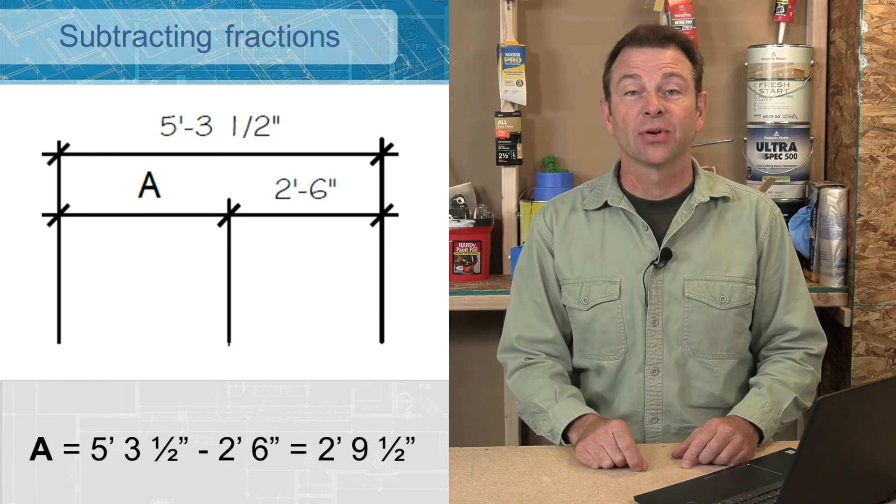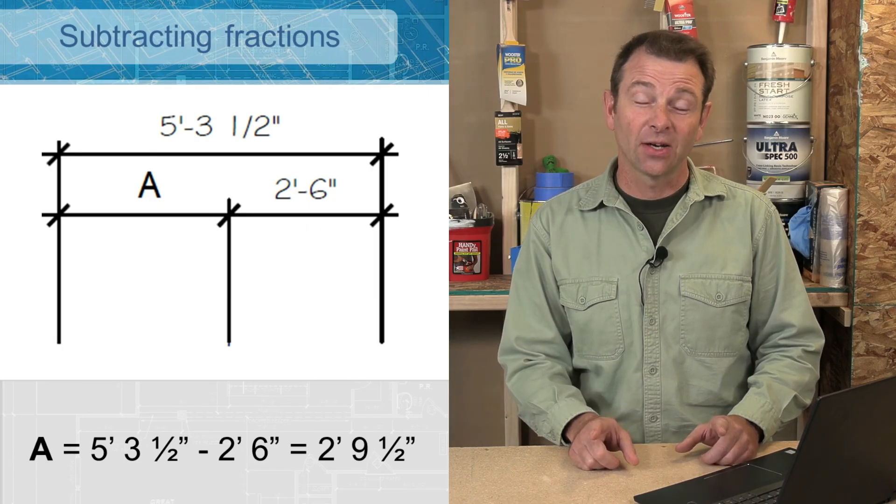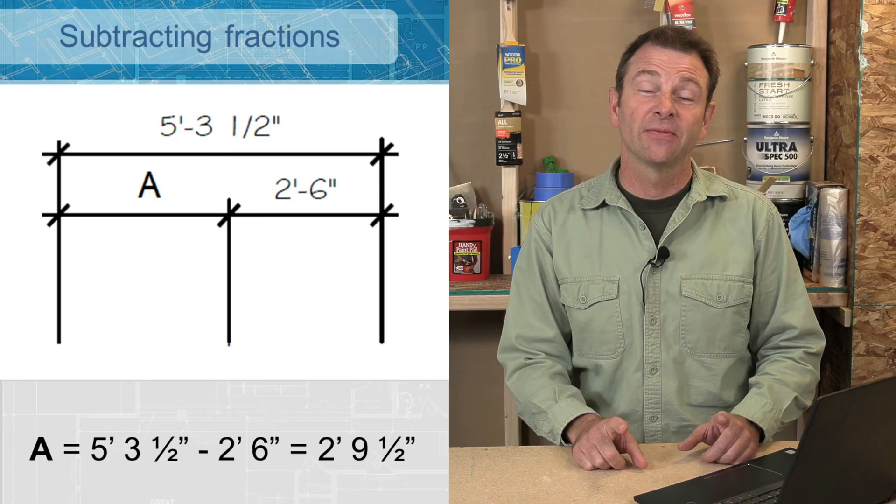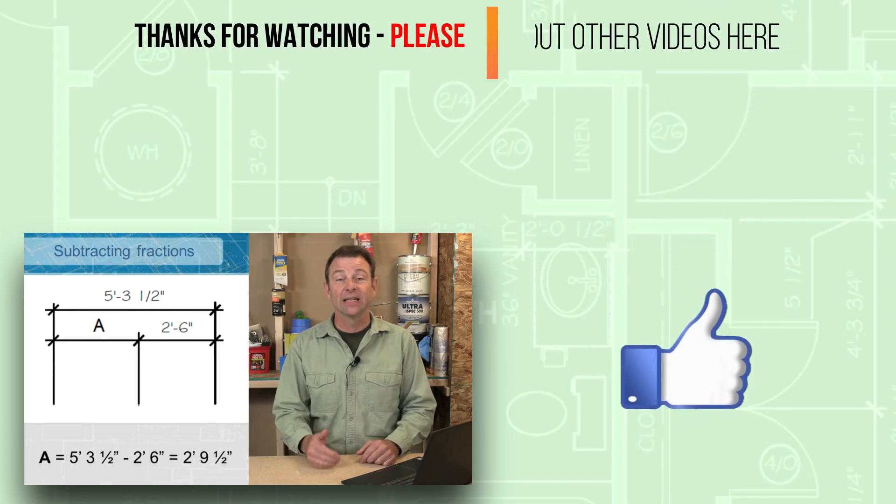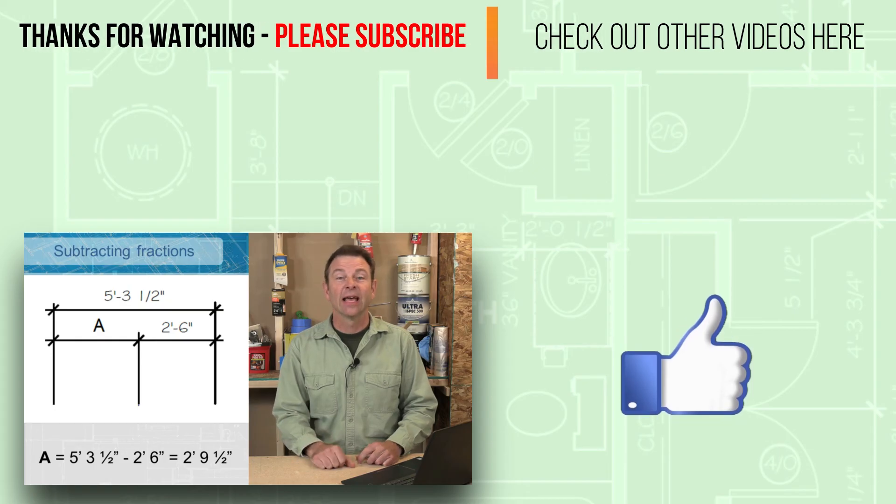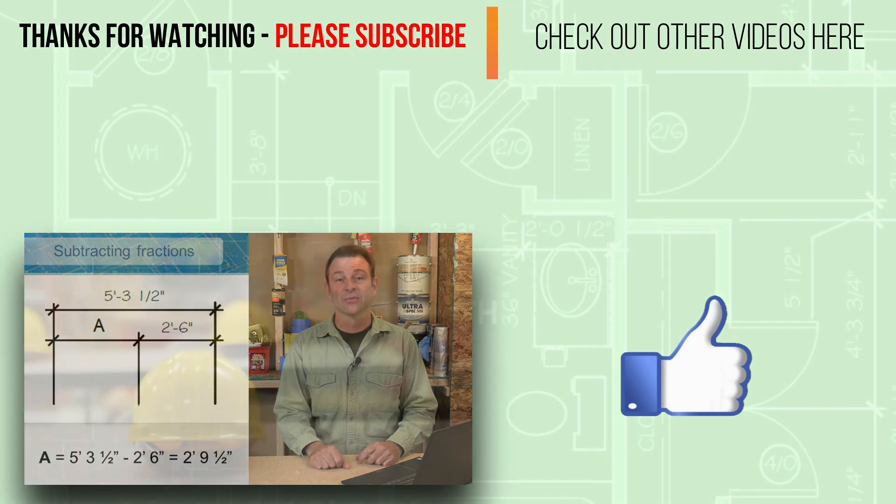We're going to take 5 foot 3½ inches and subtract 2 feet 6 inches from it. And one way to solve this would be to convert both of these measurements to inches and then subtract the inches, then convert them back to feet and inches if that's what you needed at the end. For more information about solving for this and different ways to do it, check with the student resources.